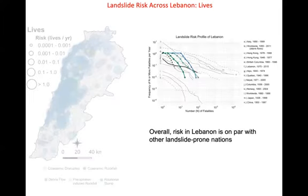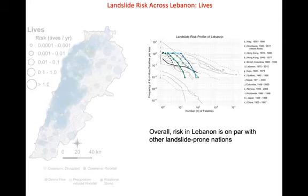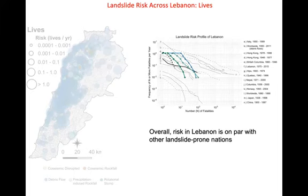To get a sense of what the societal risk in Lebanon looks like compared to other nations, if we plot the data in an FN characteristic diagram — which shows the annualized frequency of different numbers of fatalities — this data pretty much plots on par with other landslide-prone nations. So it's not extraordinary, but it is quite high and somewhat in excess of what is often deemed acceptable by some international standards.